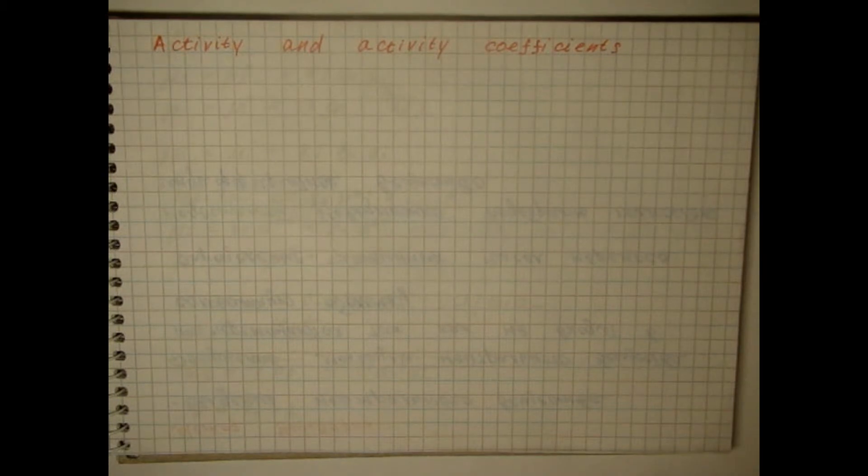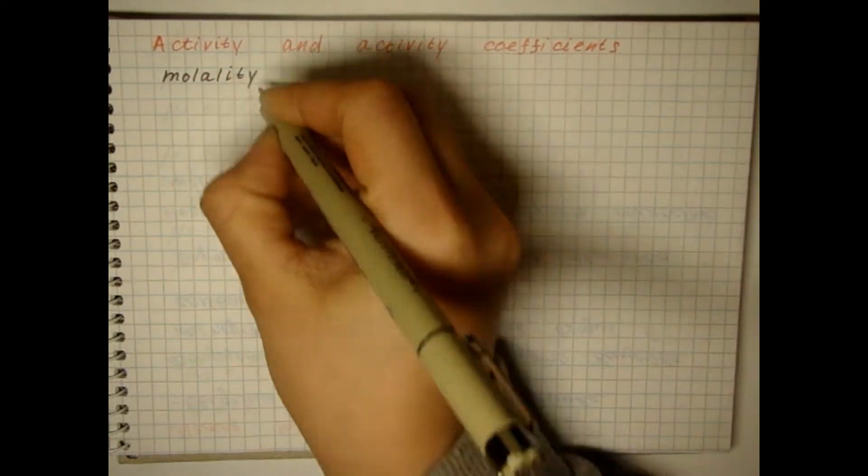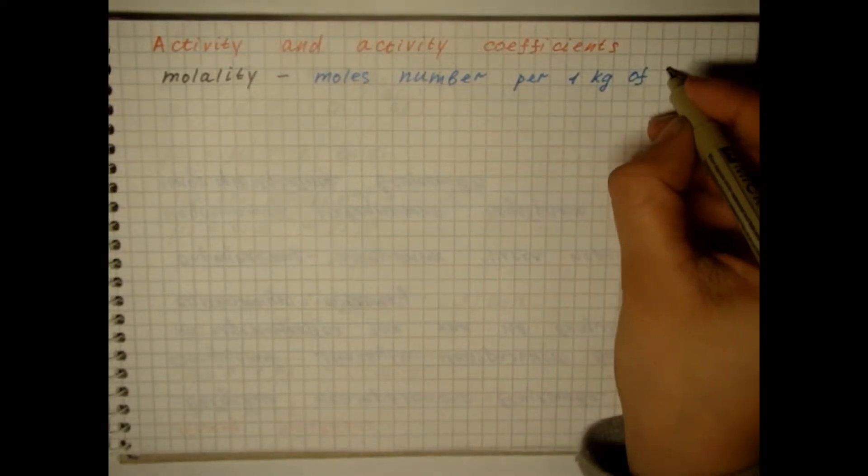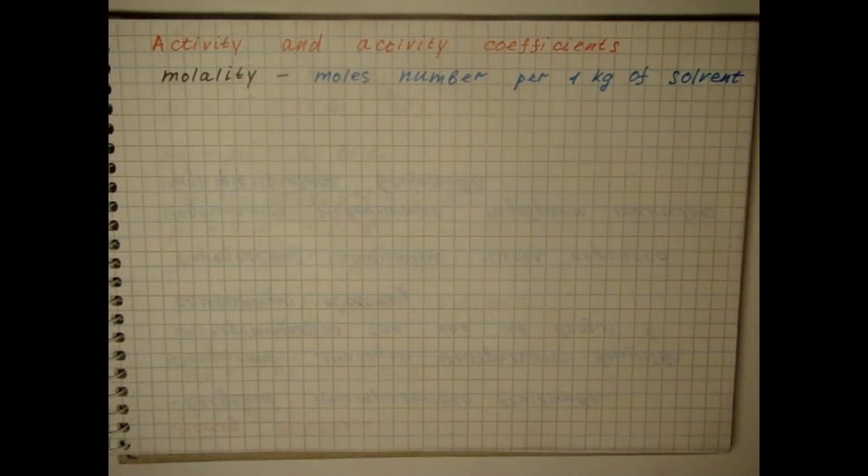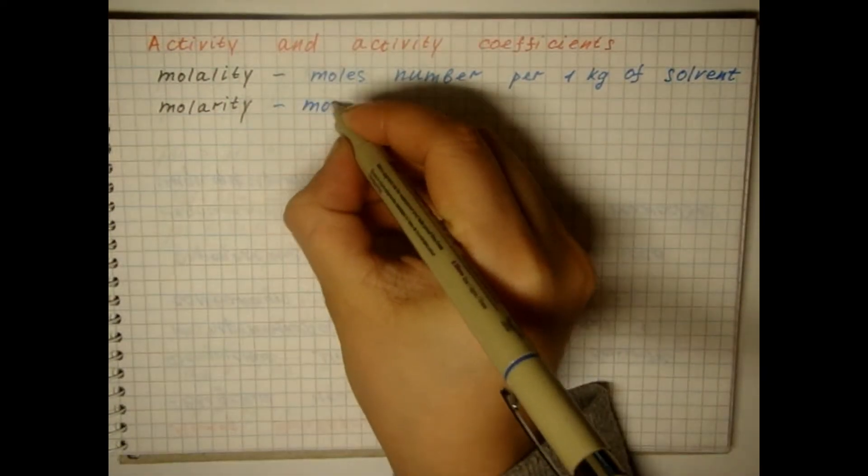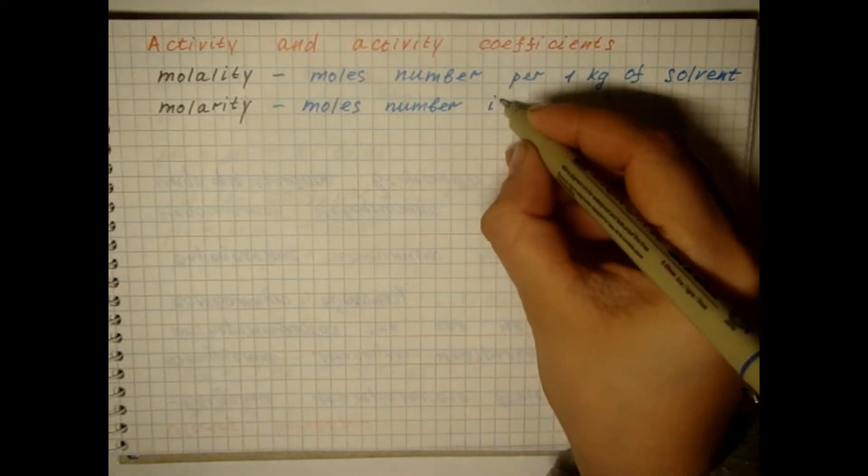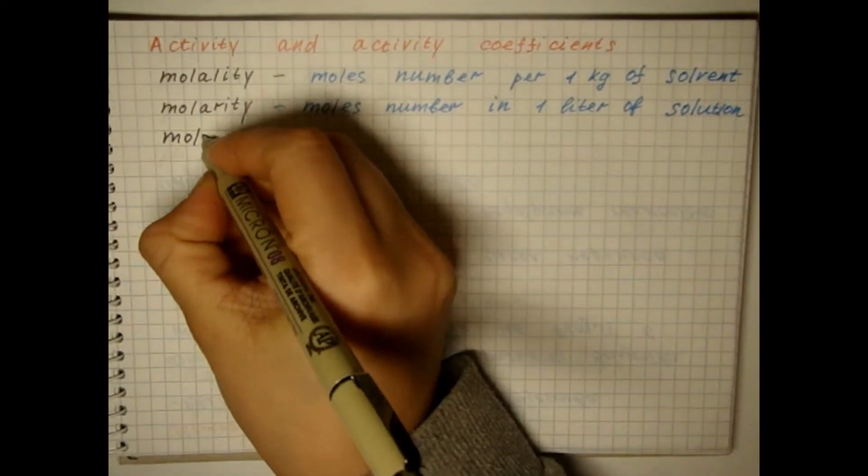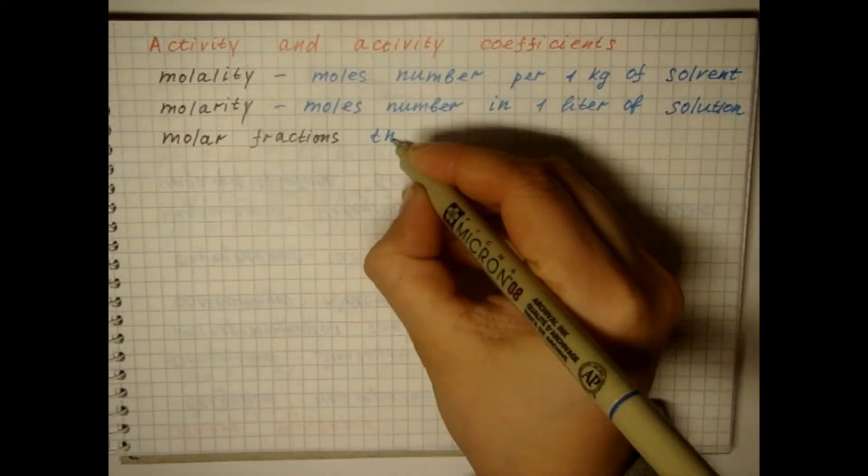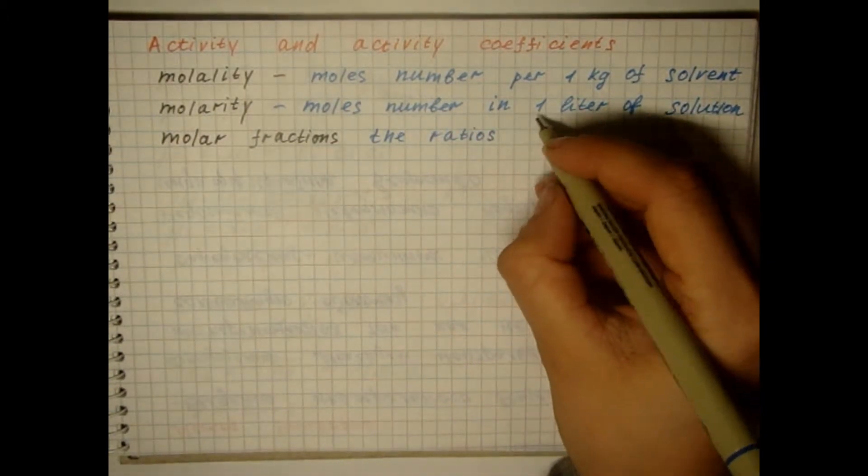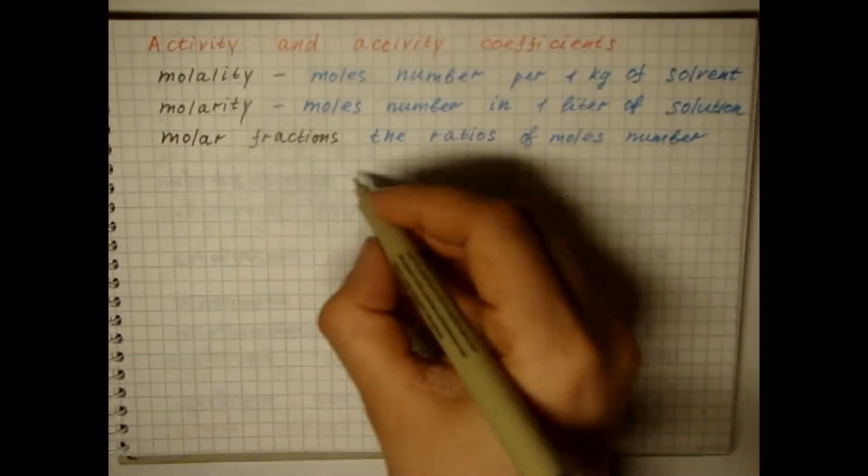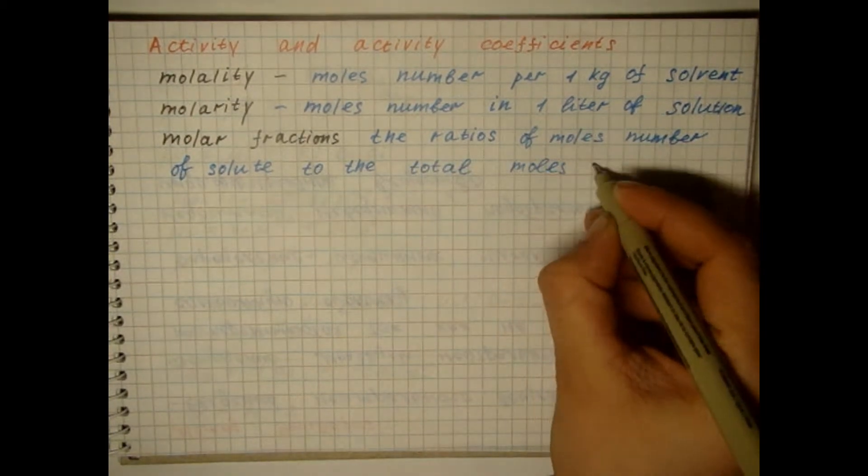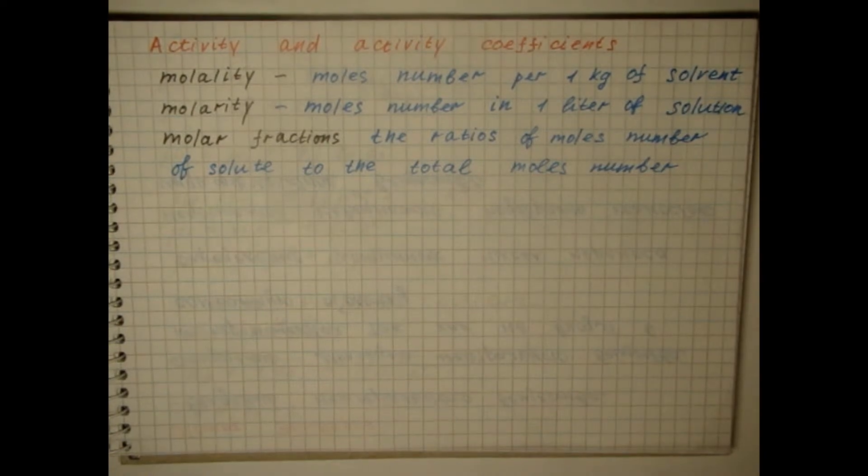Since concentration can be expressed in the molar scale, molal scale, and in molar fractions, there are three scales of activity and activity coefficients.